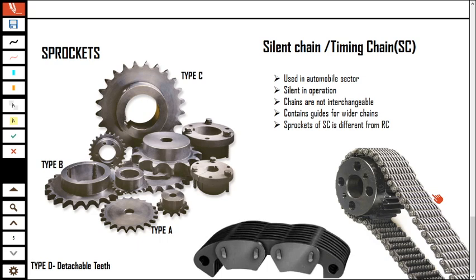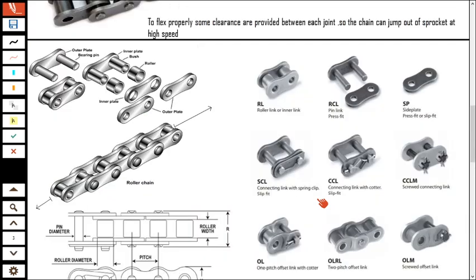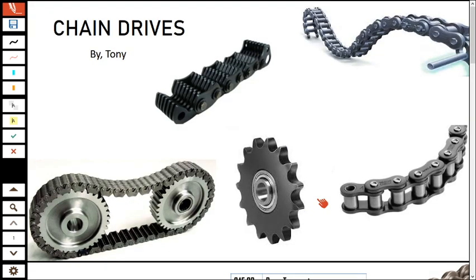The silent chain has different layers, and sometimes includes a guide link at the center called the guide chain, which keeps the chain on its prescribed path of operation. In the next class we will focus on the design procedure for chain drives. The basic concepts are clear, so let us stop here.